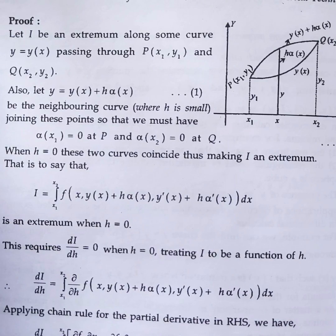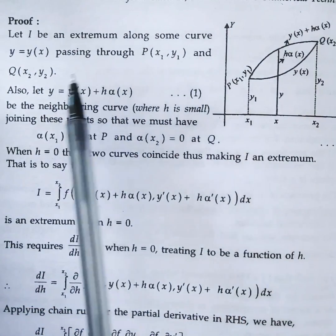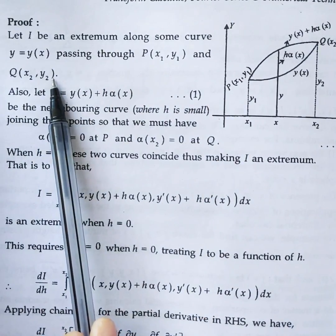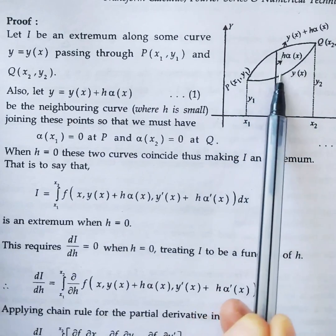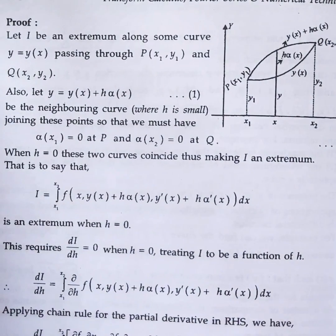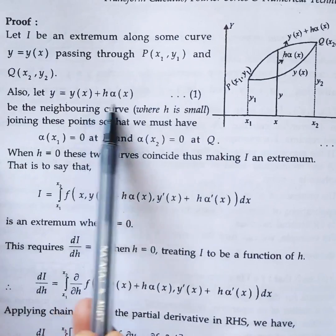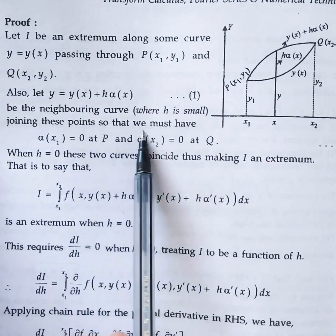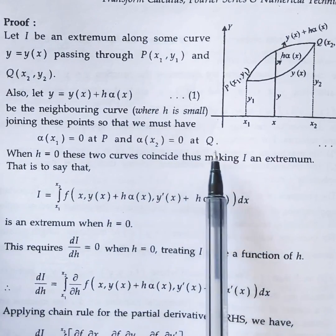Now let us see the proof. Let I be an extremum along the curve y = y(x) passing through P(x1, y1) and Q(x2, y2). Let y = y(x) + h·alpha(x) be the neighbouring curve where h is small, joining these points, so that alpha(x1) = 0 at P and alpha(x2) = 0 at Q.